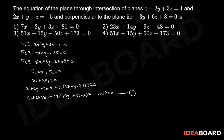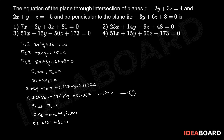Since equation (1) is perpendicular to π3 = 0, we apply the condition a1·a2 + b1·b2 + c1·c2 = 0. That gives: 5(1 + 2λ) + 3(2 + λ) + 6(3 − λ) = 0.